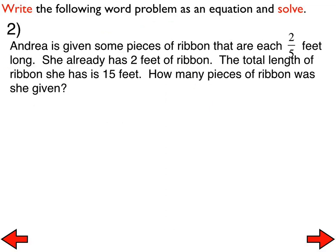Let's take a look at number 2 — everybody set it up and solve it. Number 2 will not turn out even, and that's okay. Sometimes we end up with equations that give us a whole number, and sometimes it's a mixed number or a decimal. Our equation will turn into 2 fifths x plus 2 equals 15.